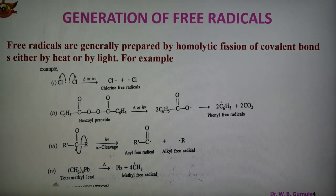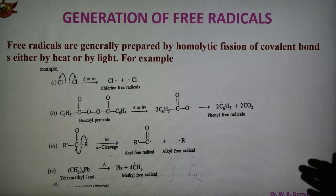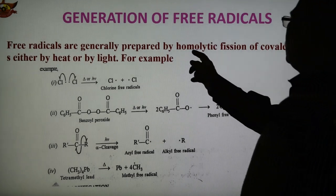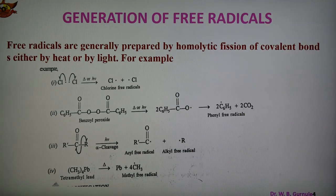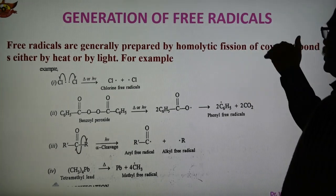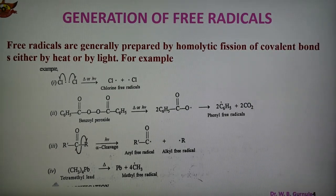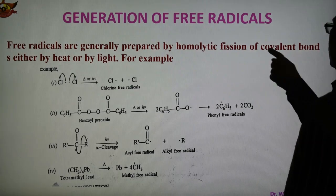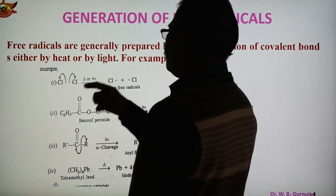How are these Free Radicals formed? Four methods have been shown here. Free Radicals are generally formed by homolytic fission. What is homolytic fission? After breaking of the bond — cleavage of the bond — each one electron goes to both the species. So equal distribution — homo means same — same distribution of electrons of the covalent bond after breaking. So either by heat or by light, this homolytic fission of the covalent bond takes place.